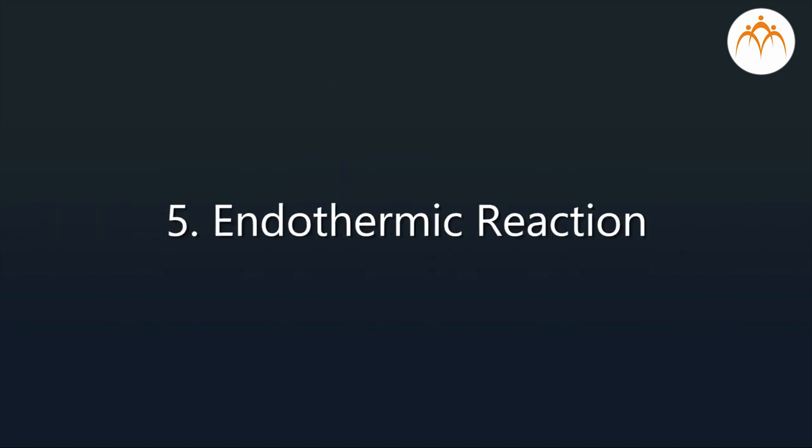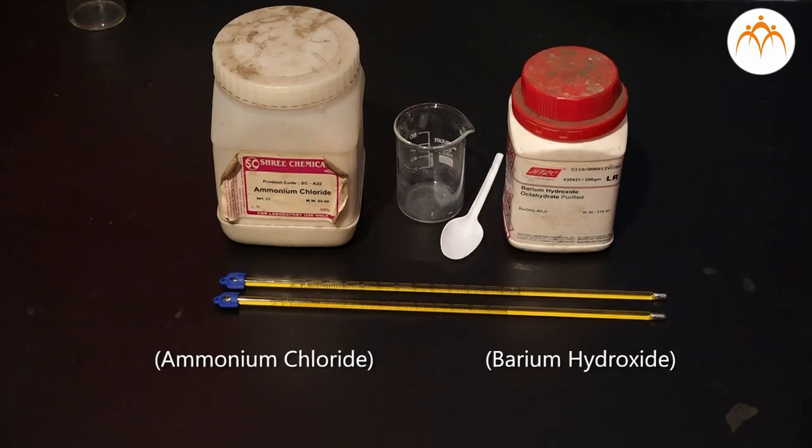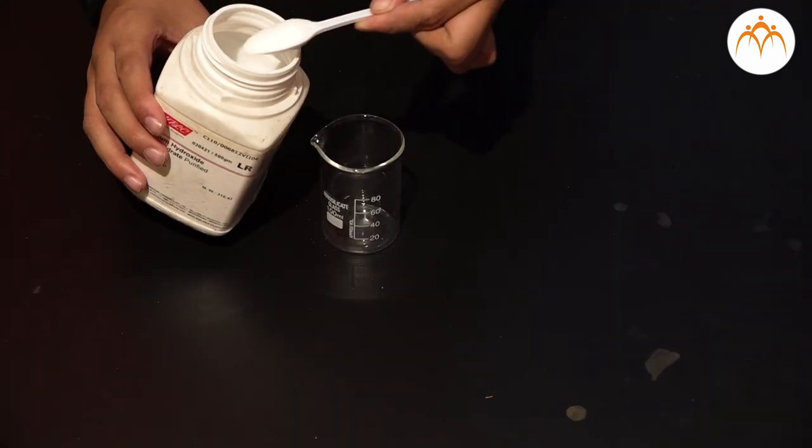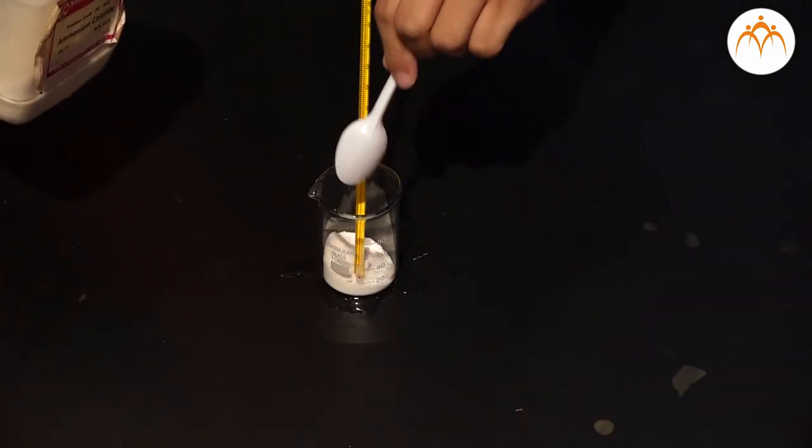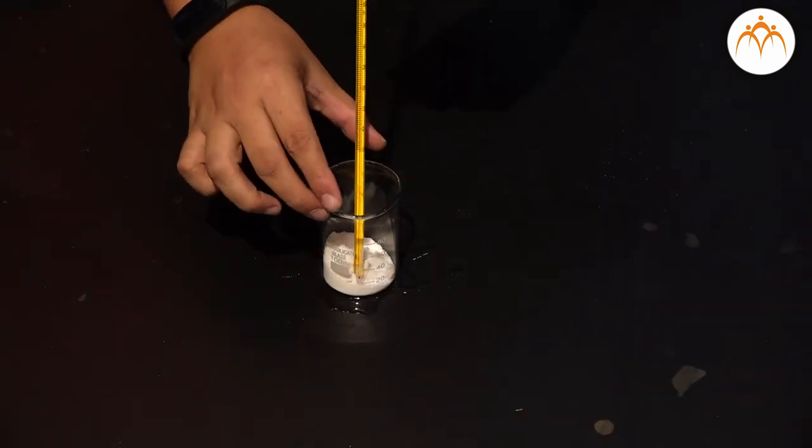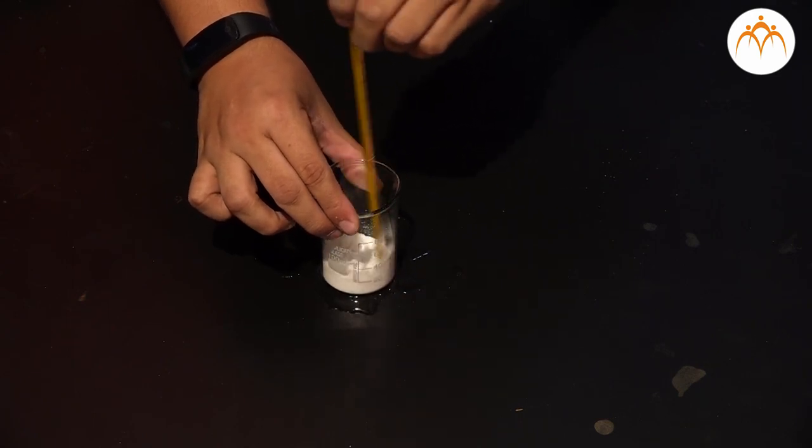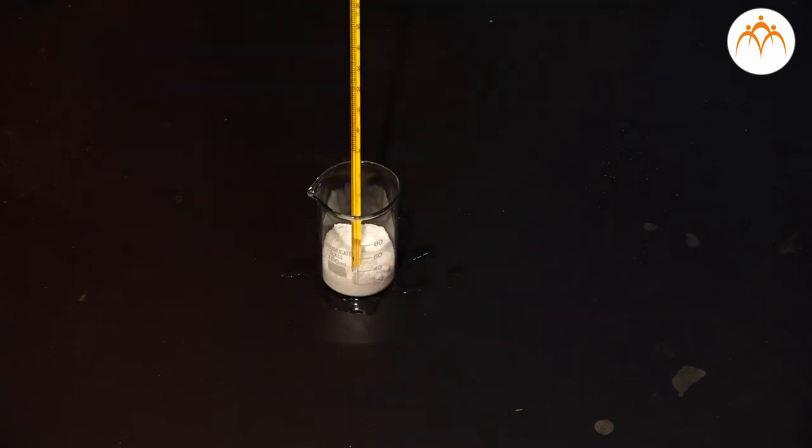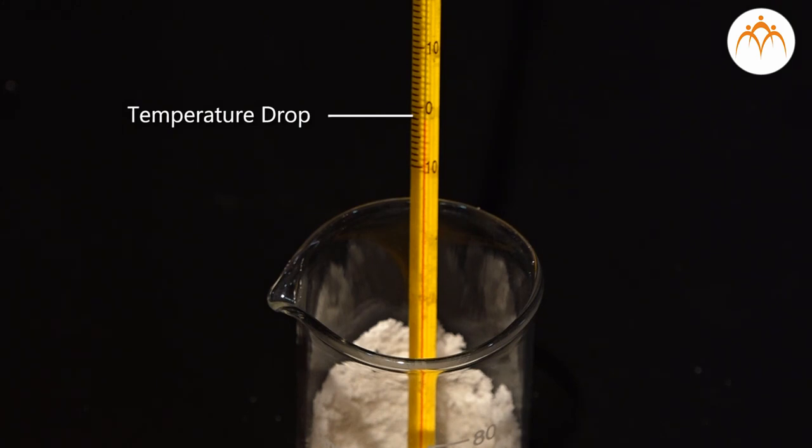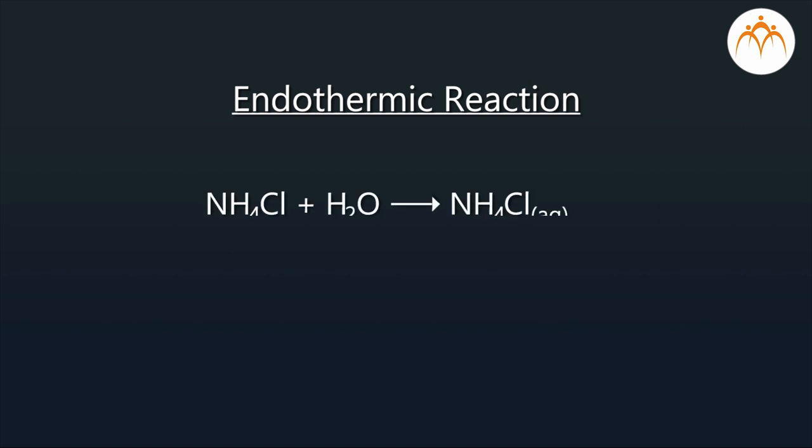Fifth, endothermic reaction. The reaction that absorbs heat from the surroundings. Breaking of bonds requires energy. Hence, this reaction absorbs heat. Example, NH4Cl when dissolved in water, the test tube becomes cool. CaCO3 plus heat gives CaO plus CO2.